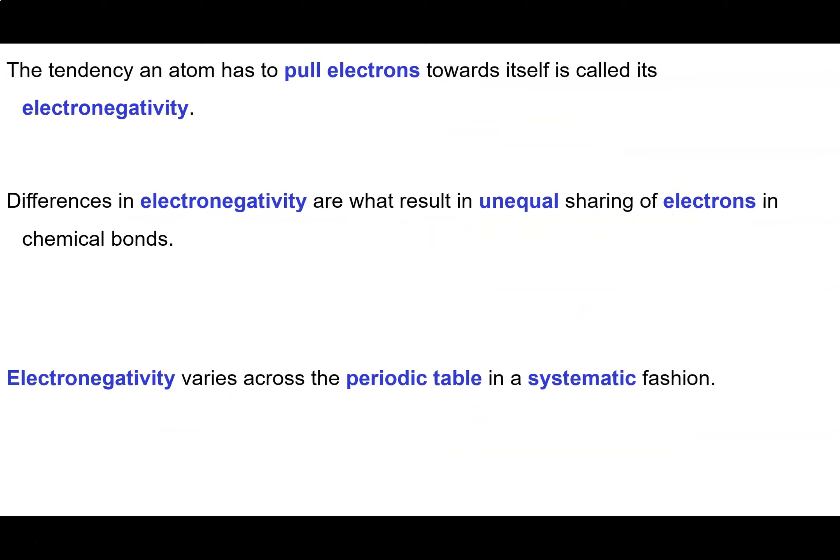So how do we know if we have a polar covalent bond or not? And if we do have a polar covalent bond, how do we know what is the positive end and what is the negative end of that bond? The tendency of an atom to pull electrons towards itself that are being shared in a bond is called the atom's electronegativity.